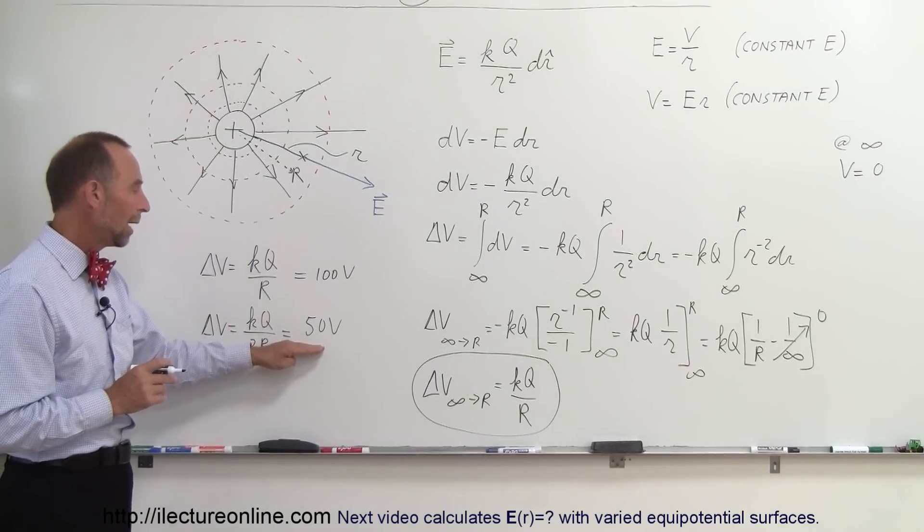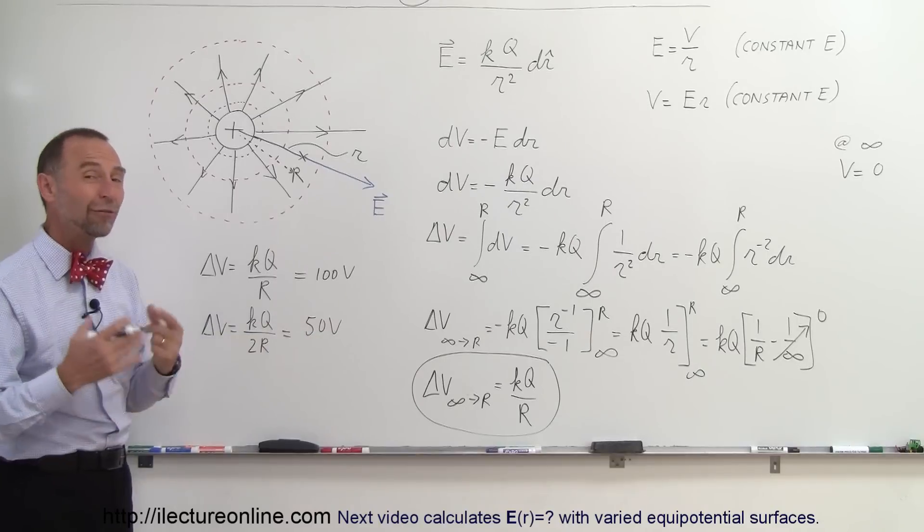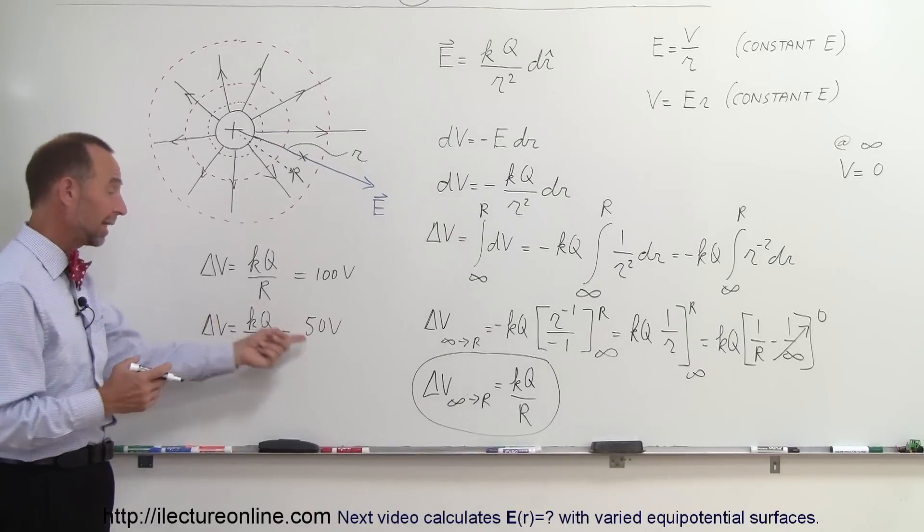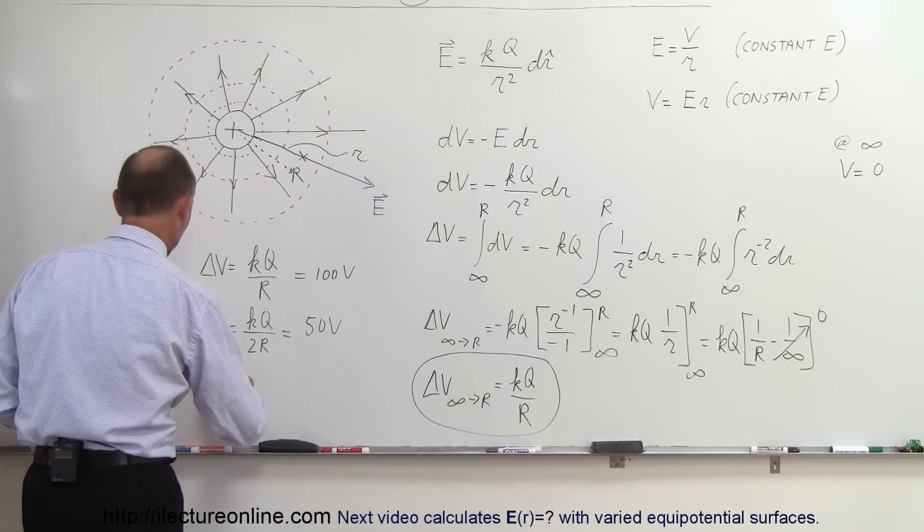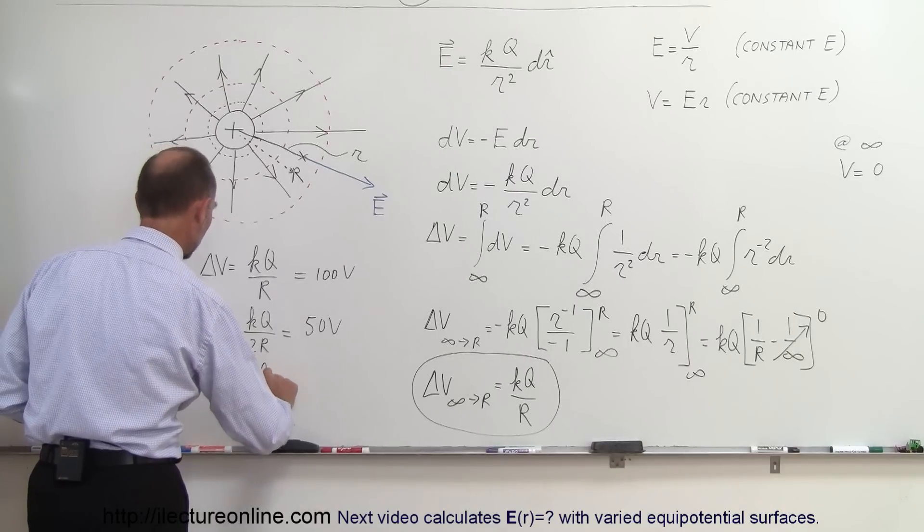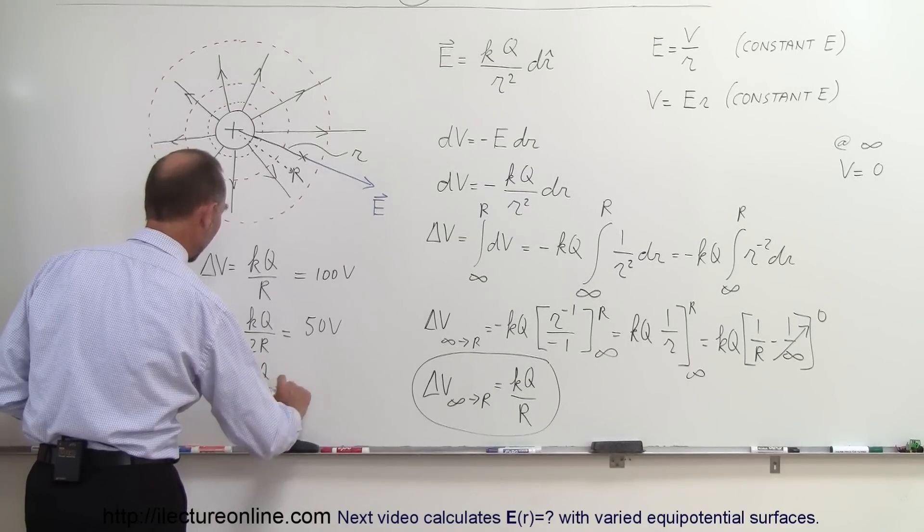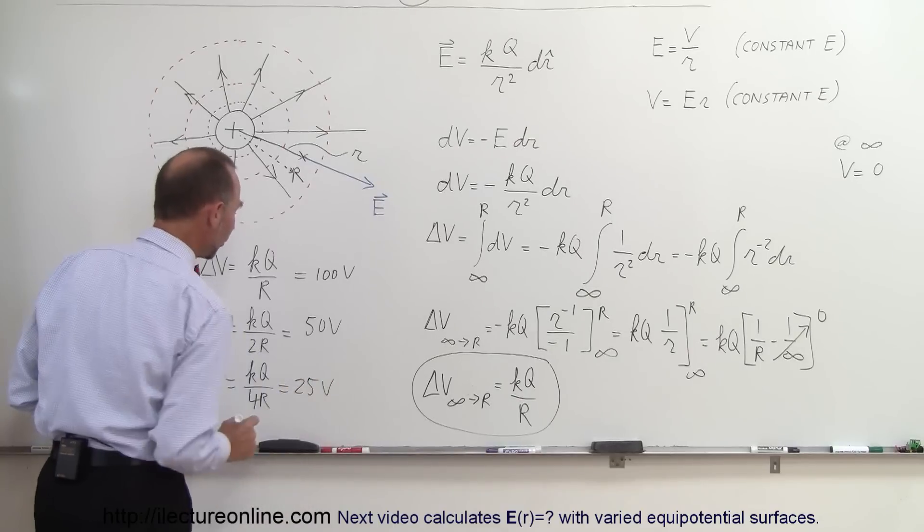If I now want to go to half of half, how far do I have to go out now? If I want to get this down to 25 volts, then delta V is equal to KQ divided by 4R, and that would now be 25 volts.